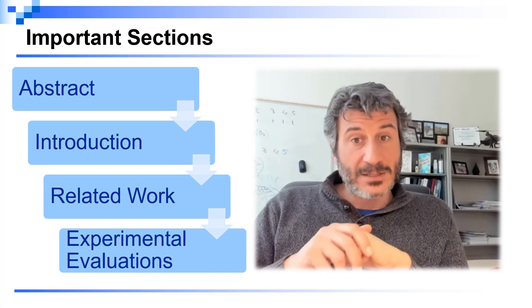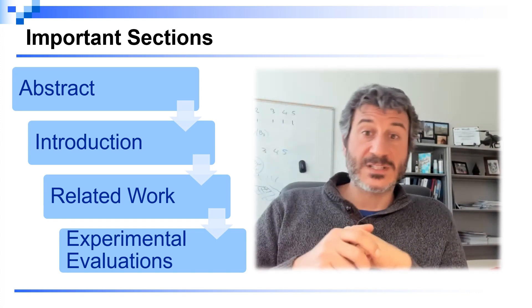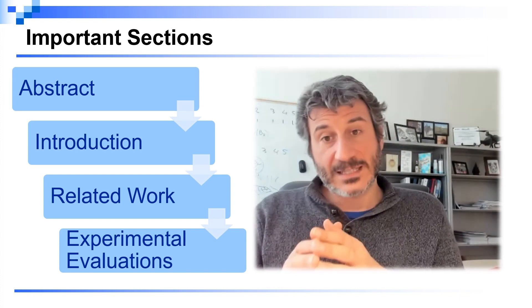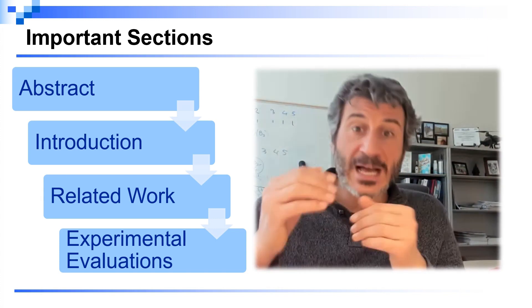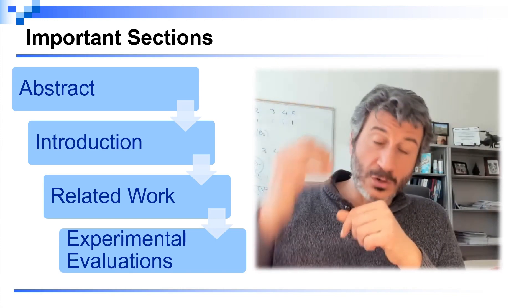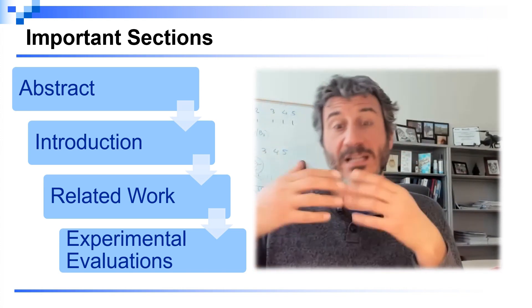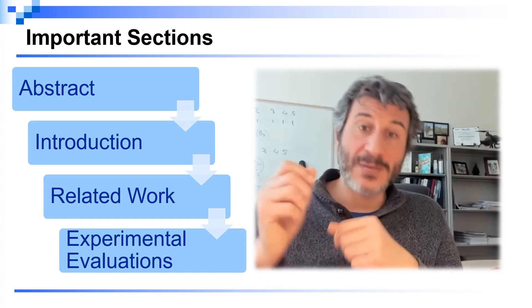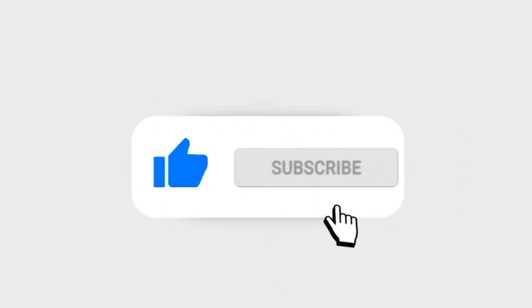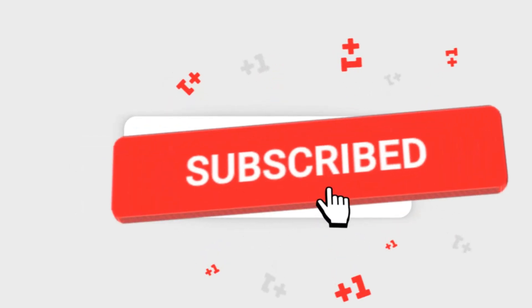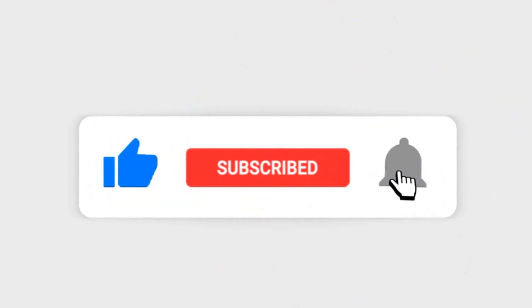We have already made videos in this channel on how to write an abstract, an introduction, and a related work section. These videos have received the highest views, so make sure to check them out—I'm going to link them in the description below. Today we're going to talk about another very important section, which is the experimental evaluation. Before we start, please make sure to like this video and subscribe to the channel so that the content can reach a wider audience.